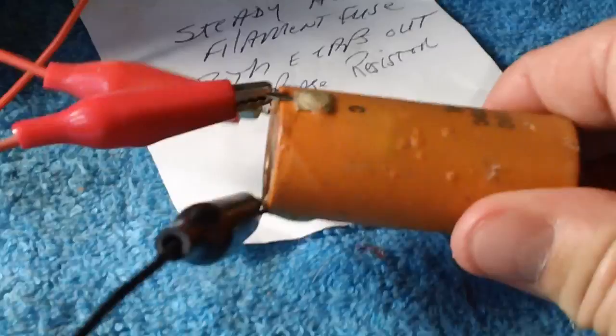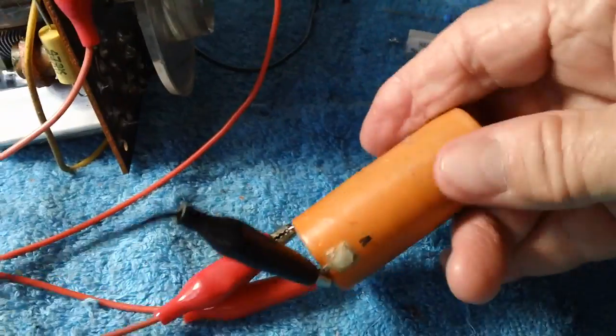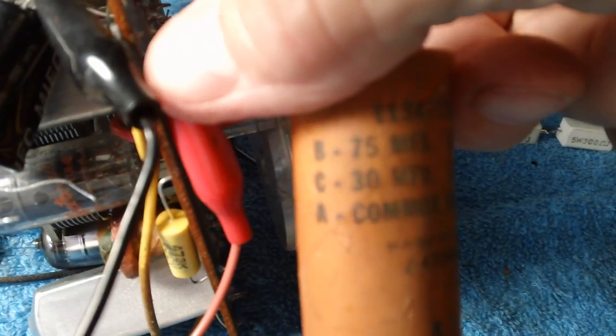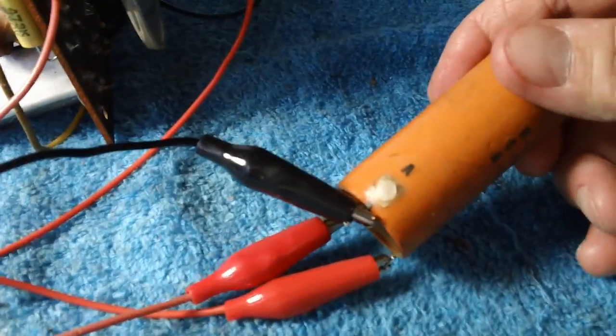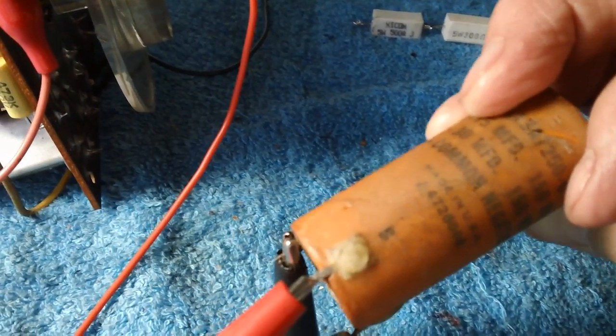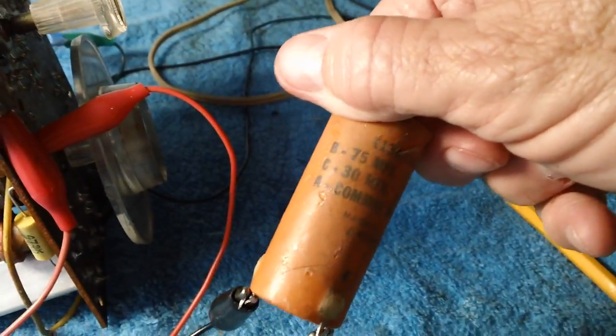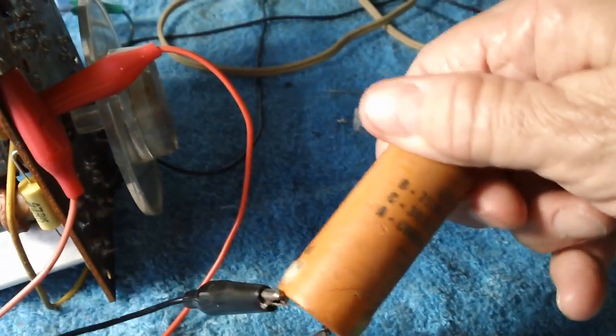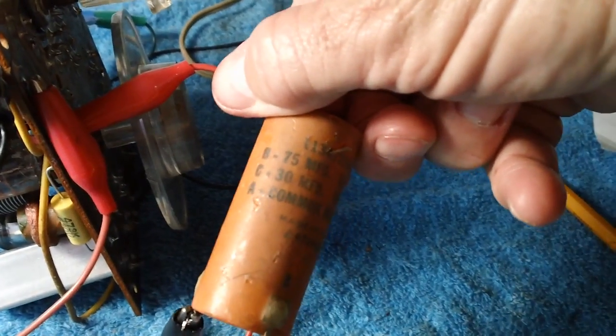Now, one other thing is I went ahead and I reconnected the capacitor that came out of this radio. I wanted to show you, let you see what it sounded like. You look on the side of the capacitor, it says that B is the 75 microfarad, C is the 30, and A is the common between them. So A is the common, and then there's C and B on this particular electrolytic capacitor. They're labeled that way.